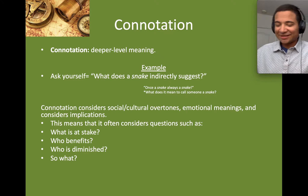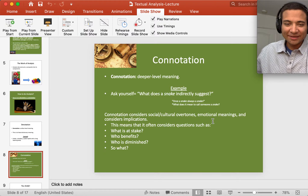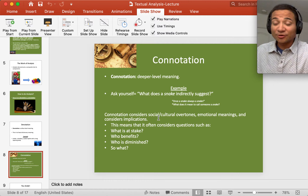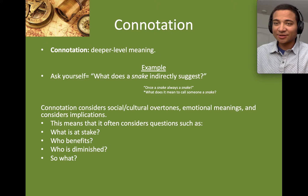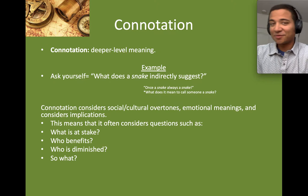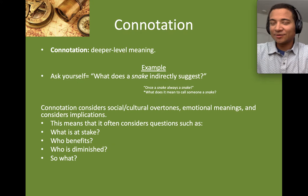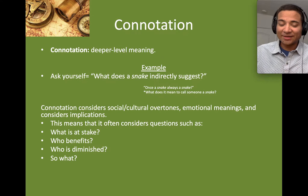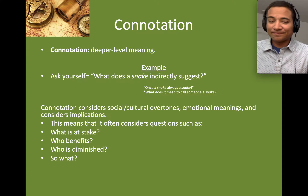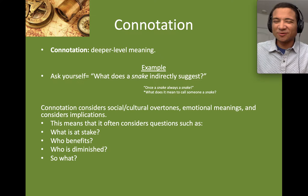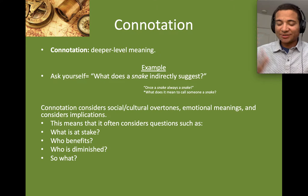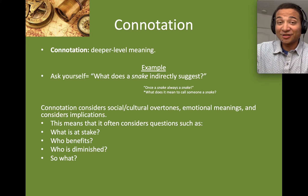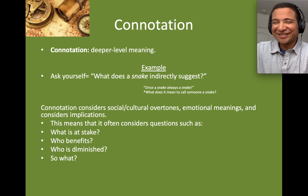When we look at connotation, it considers social-cultural overtones, emotional meanings, and implications. The implication of something is its 'so what' question: Why does it matter? What is its significance? What is at stake? Who benefits? Who is diminished? These key considerations of what connotation uncovers will be very beneficial as we move forward through this lecture and complete the tasks in our handouts.